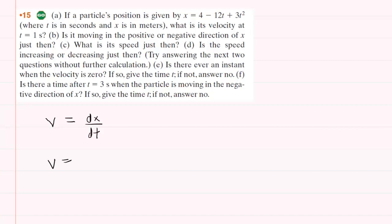We can go term by term and compute the derivative. The first term is a constant, so the derivative would be 0. Then we have minus 12t, the derivative of which is minus 12. Following the power rule, we pull that power down and multiply by the coefficient. We would get 6t, and then we subtract 1 from the original power to get a power of 1. We can simplify this and say that the velocity is simply negative 12 plus 6t.